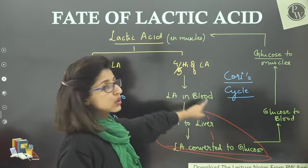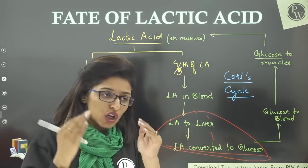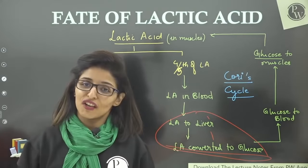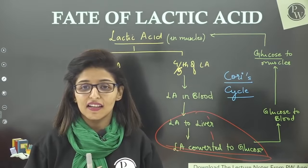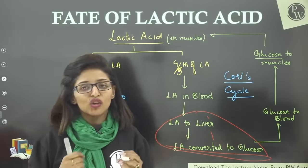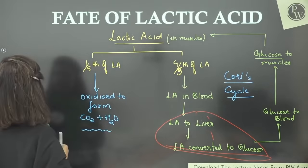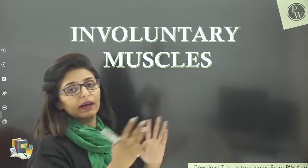This lactic acid conversion into glucose can be sped up by taking some vitamins. So if you get cramps, take some multivitamins — they help get rid of cramps faster. That was all about skeletal muscles: we studied their structure, mechanism of contraction, different types, why they fatigue, and what happens to lactic acid.